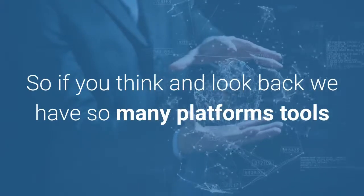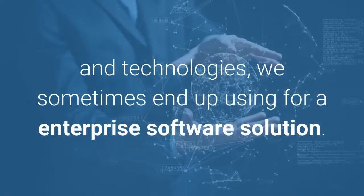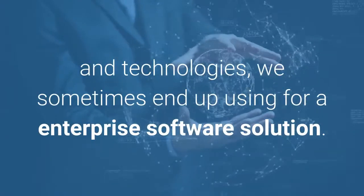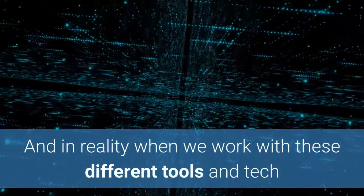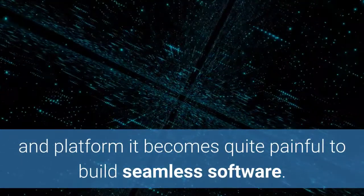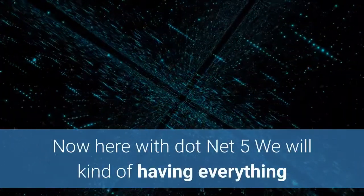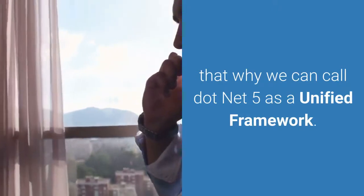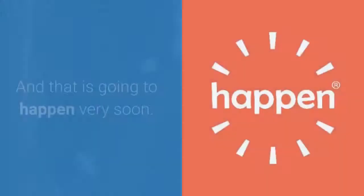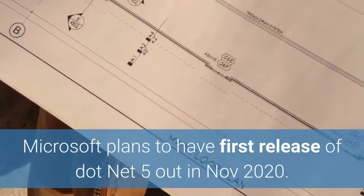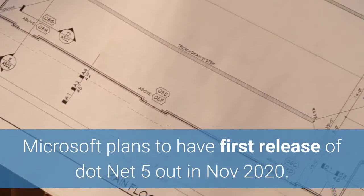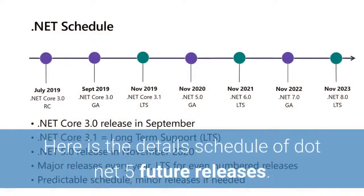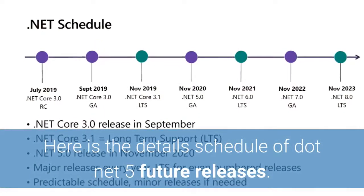If you think back, we have so many platforms, tools, and technologies we sometimes end up using for an enterprise software solution. Working with these different tools and platforms becomes quite painful to build seamless software. With .NET 5 we will have everything under one roof for creating enterprise software solutions — that's why we can call .NET 5 a unified framework. Microsoft plans to have the first release of .NET 5 out in November 2020.